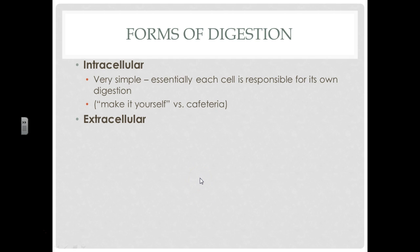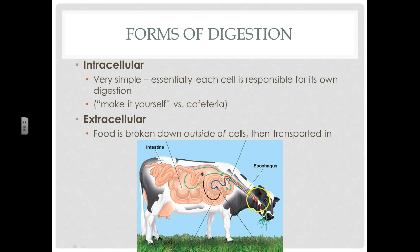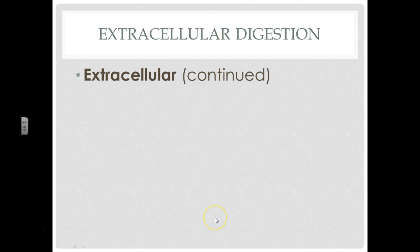We have extracellular digestion. Extracellular digestion means that the food is broken down outside of cells, and then it's transported in. Let's use an example of a cow — it takes the food, breaks it down in its digestive tract, and then once it's broken down, it's distributed throughout the body. Everything is pre-digested for all of your cells, so your cells don't actually have to do any work. They're pretty much fed.